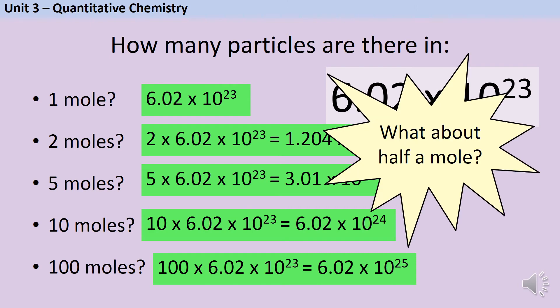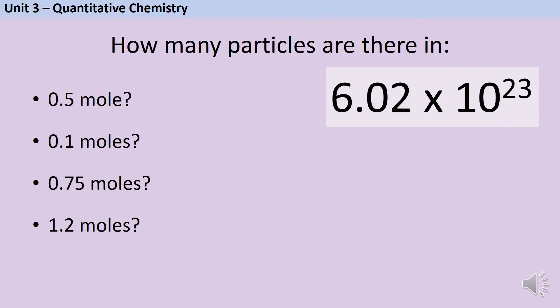But what about half a mole? In the same way that it's entirely reasonable for you to have half a million, you can have half a mole. Our process is exactly the same even if the number of moles is a decimal and even if it's less than one. You just multiply the number of moles by Avogadro's constant.